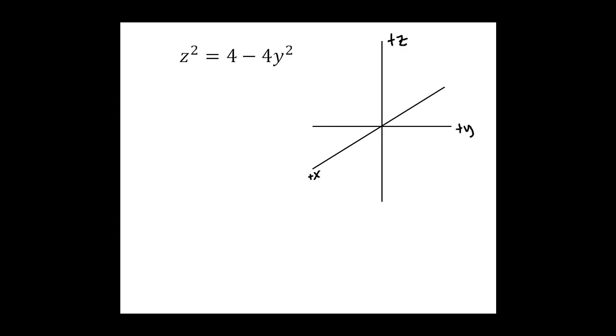This time we're going to graph the surface z squared equals 4 minus 4y squared, and the first thing we should notice about this equation is that there is no x.